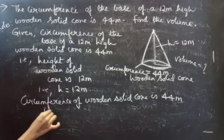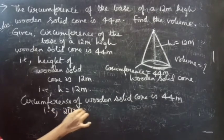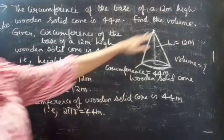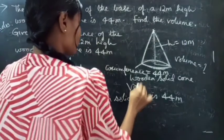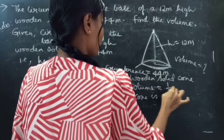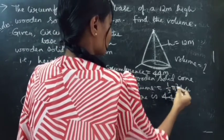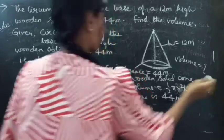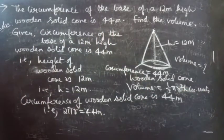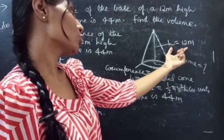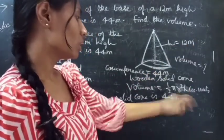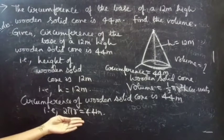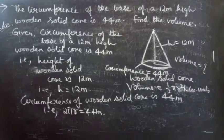That means we have 2πr equals to 44 meter. We know that the formula for volume of a cone is 1 by 3 π r squared h cubic units. We have the value of h equals to 12 meter, but we don't have the value of r. So in order to find the value of r, we use the condition that 2πr equals to 44 meter.